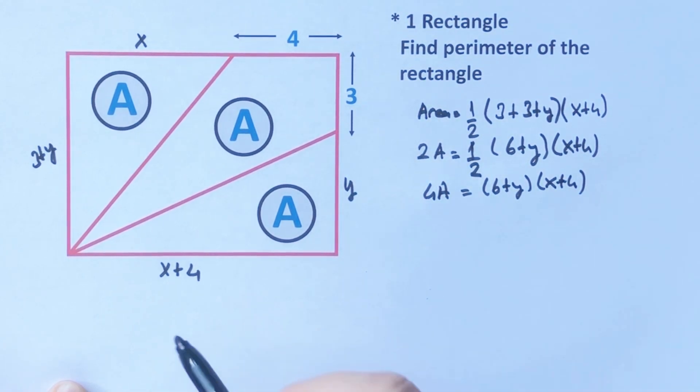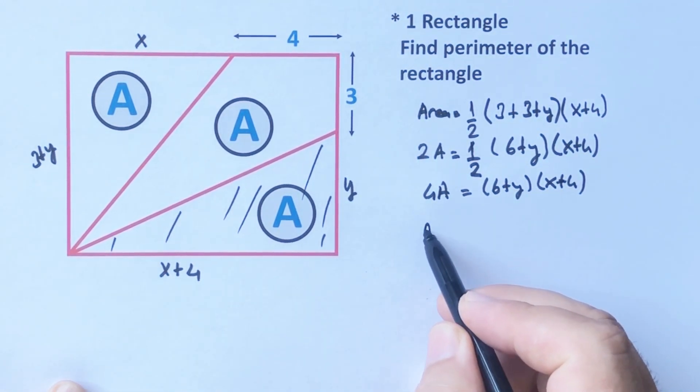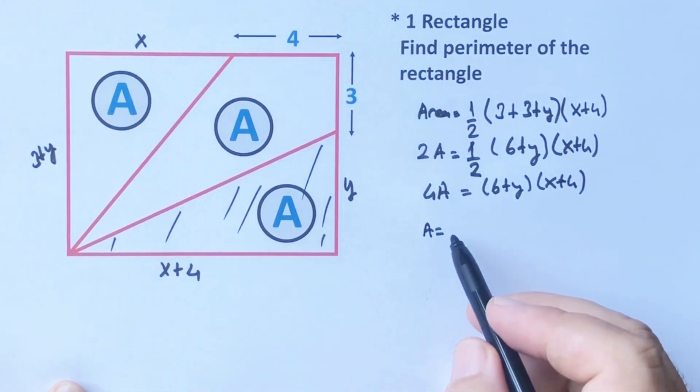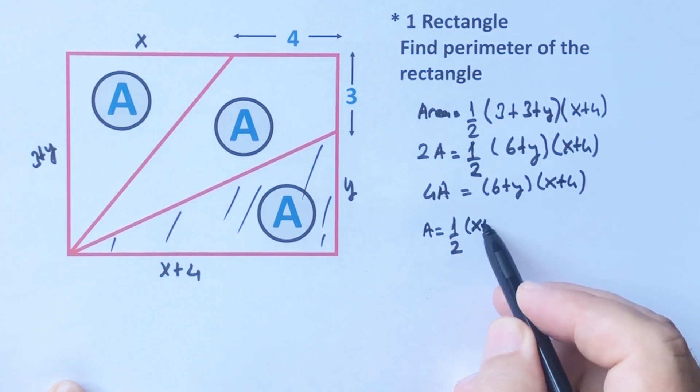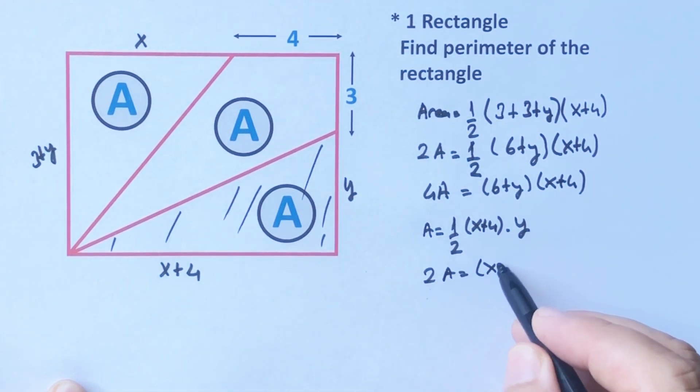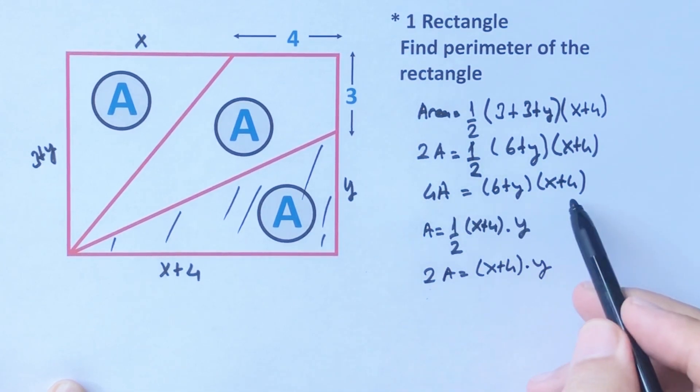The area of this triangle equals A, so A equals half of the base and height. Therefore, two A equals x plus four times y. This is the second equation.